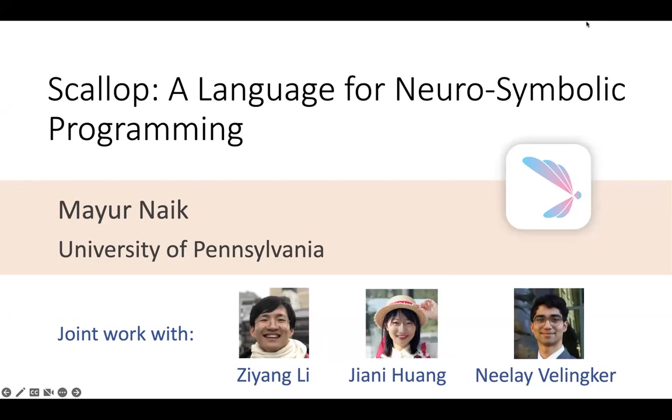Professor Mayur is a professor and graduate chair in the Department of Computer and Information Science at University of Pennsylvania. He is broadly interested in topics related to programming languages and artificial intelligence. His current research is motivated by a need to make AI applications safe, interpretable, data efficient, and easier to develop.